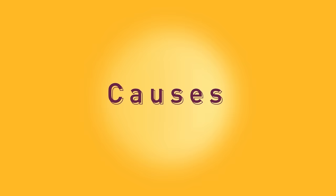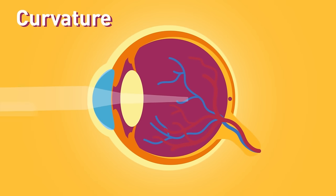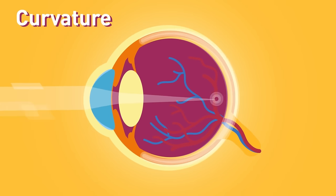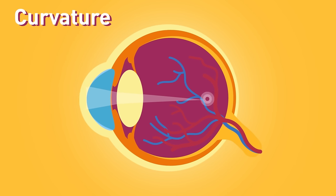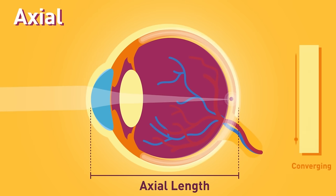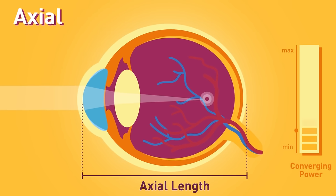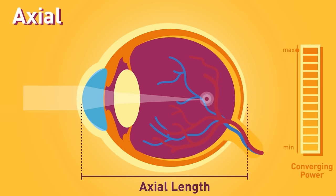Causes. Curvature: increase of curvature of the cornea or lens causes light rays to be focused in front of the retina, and hence myopia occurs. Axial: increase in axial length of the eye increases the converging power and causes light rays to be focused in front of the retina.